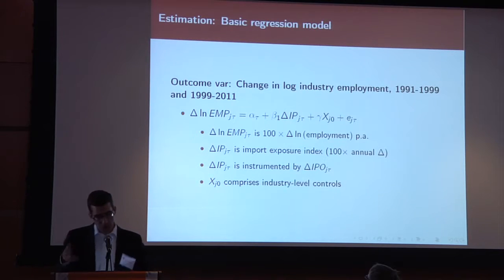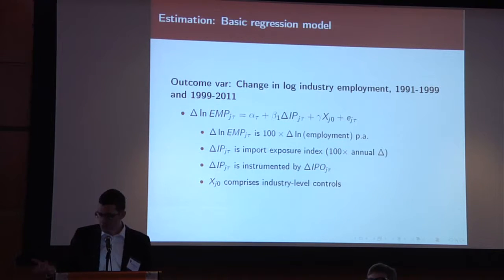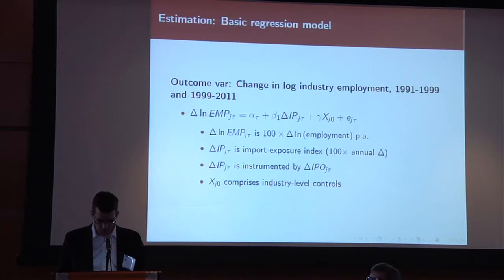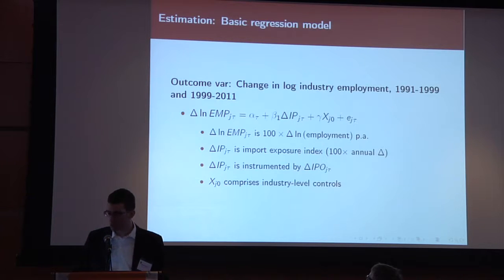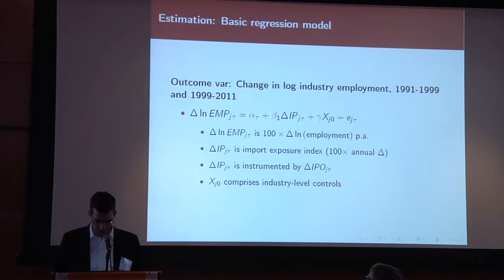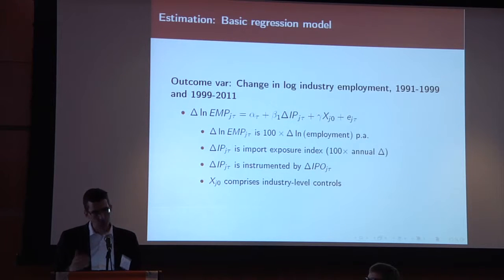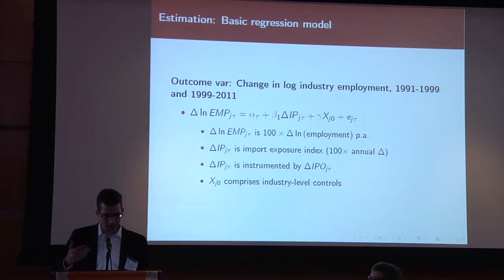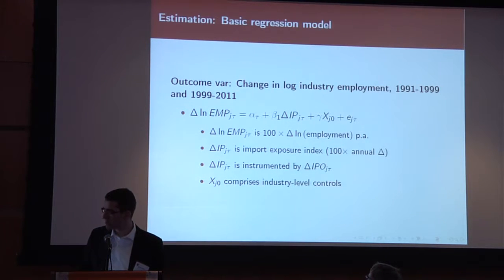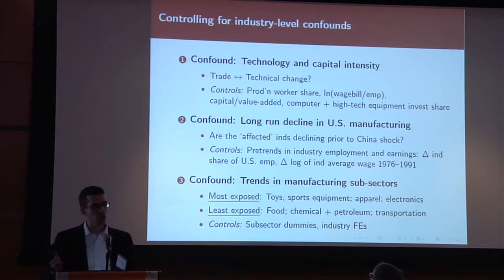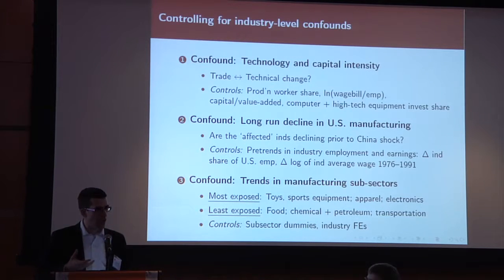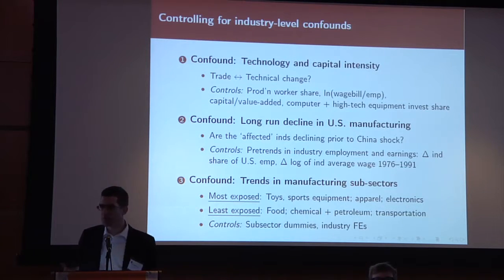Now we move to our first empirical exercise, where we relate the log change of employment in an industry over the 1990s or the 2000s to the growth in import competition in that industry. We want to make sure we're not spuriously measuring some other concurrent impact on those same industries. Specifically, we control for various characteristics of these industries that capture modes of production or use of technologies, focusing on what computer technology and automation does to those industries.